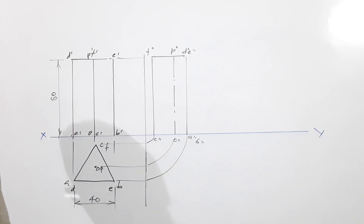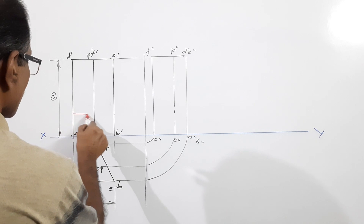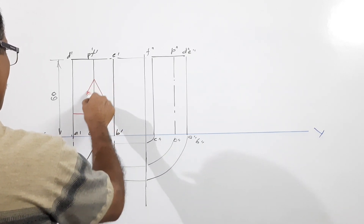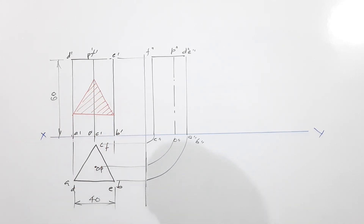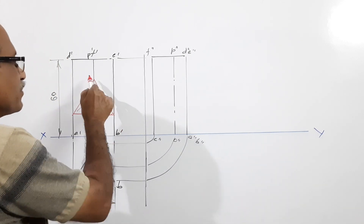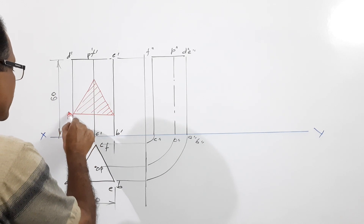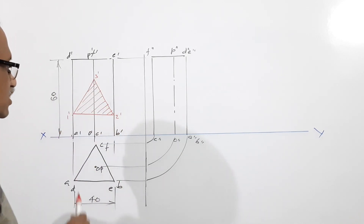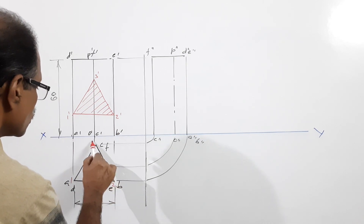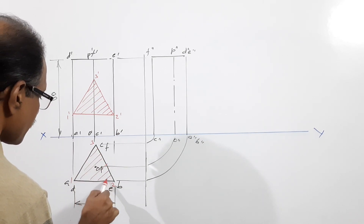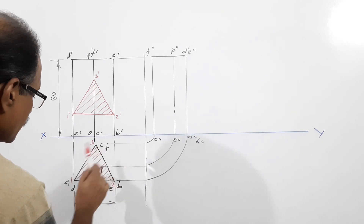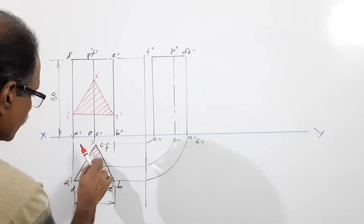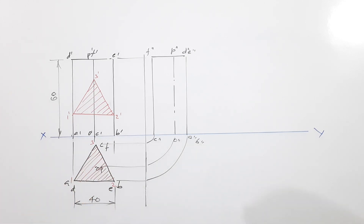Now I am going to draw the equilateral triangle visible in the elevation. This is an equilateral triangle of side 40 mm — this side is 40, this is 40, this is 40. I call the vertices 1', 2', 3'. That is your sectional elevation. The corresponding points in the plan are 1, 2, 3. Now, where is the cutting plane?